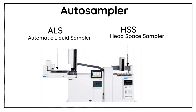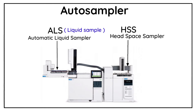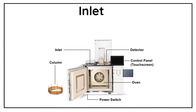The question arises: what is the difference between these two auto samplers? The answer is that when a sample is injected in liquid form then ALS is used, and when a sample is injected in vapor form then HSS is used. This is the basic difference between ALS and HSS which we should know.